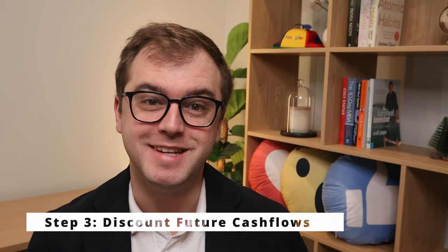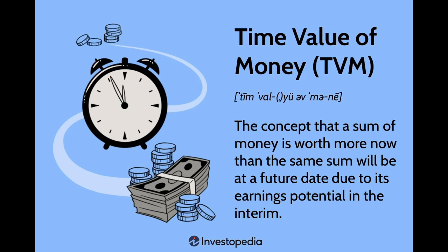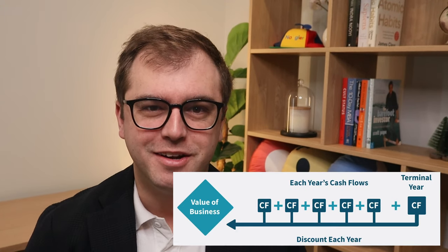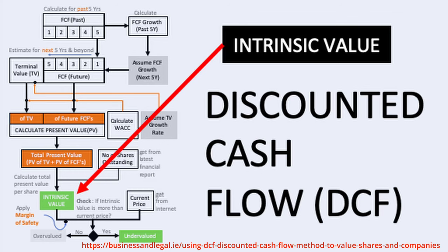Third, we'll discount our predicted cash flows from step one by our discount rate determined in step two. In finance terms, this is how we account for the time value of money. In simple terms, we adjust the future cash flows to acknowledge inflation and our expected investment return. Fourth and finally, we'll calculate our intrinsic value for Amazon's stock — what we determine their stock to be worth today. We sum up our discounted future cash flows, adjust for Amazon's net debt, and that gives us an estimate of what Amazon should fairly be valued. At this point, we'd compare it to the current market price of Amazon's stock, which will tell us whether Amazon's stock is under or overvalued according to the inputs to our calculation.